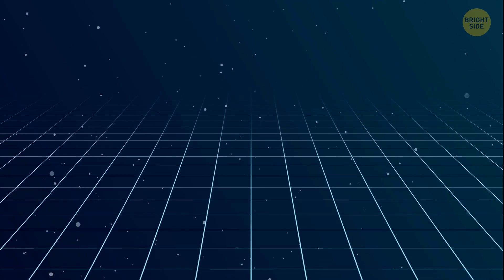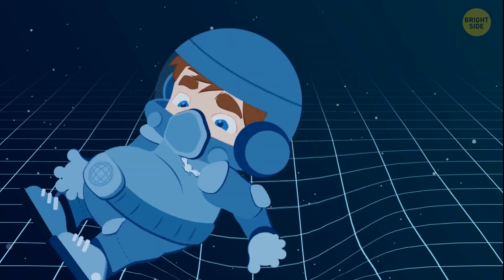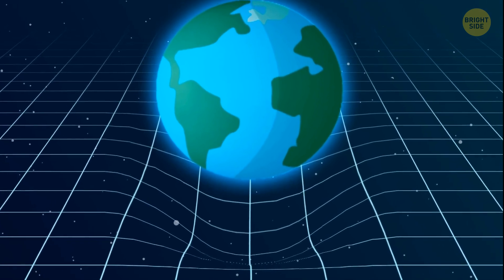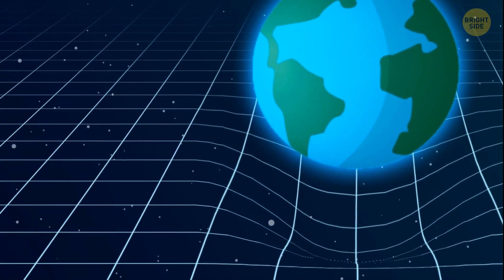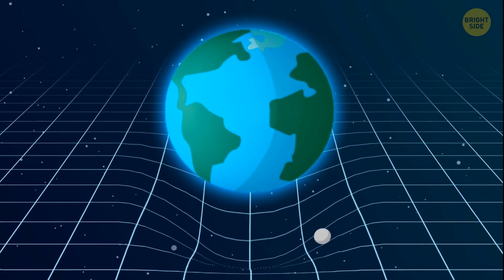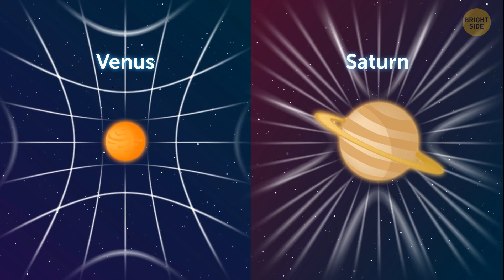This is the space-time grid. It's what our entire universe is made of. And just like a regular grid, it sags if you put something heavy on it. Like me. For example, let's put the planet Earth here. You see a little funnel that is formed around the Earth. And if you put a small ball next to the planet, it'll roll into the funnel. That's how gravity works. The heavier the object, the more it bends space-time.